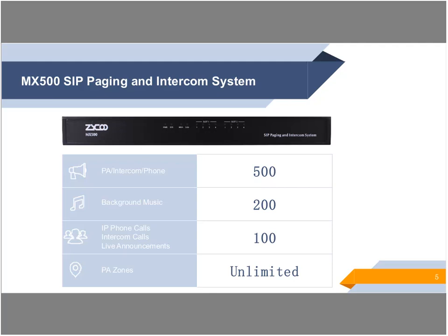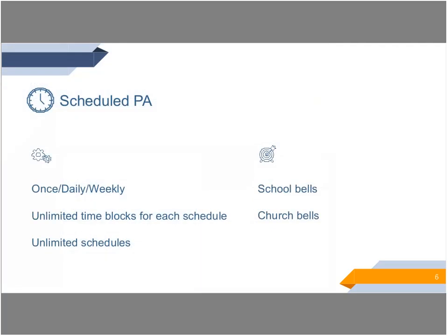For normal IP phone calls, intercom calls, and live announcements, they are all achieved by SIP calling, and it can support up to 100 such SIP calls at the same time. For the paging zones, it's very flexible and the number of zones is not limited. A same paging endpoint could be included in different paging zones. Next, let's take a look at some features of the MX500 SIP Paging and Intercom system.